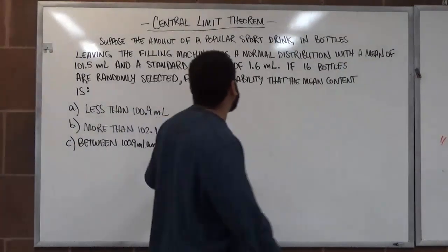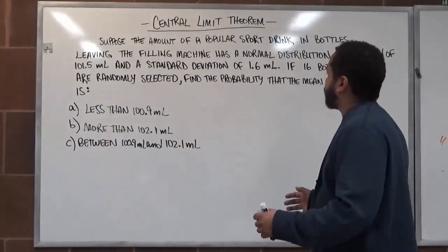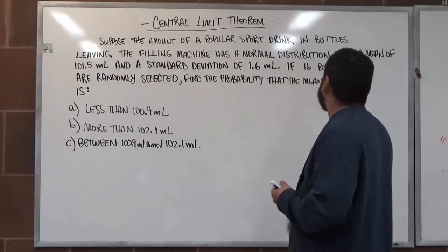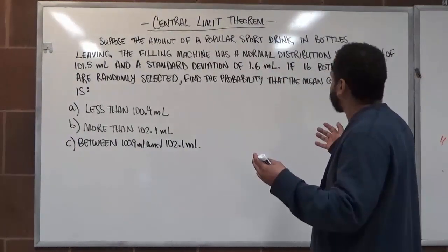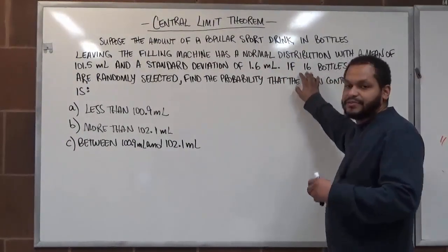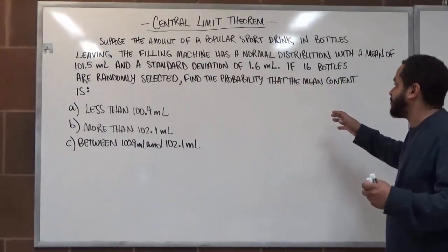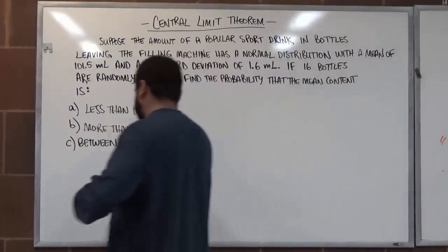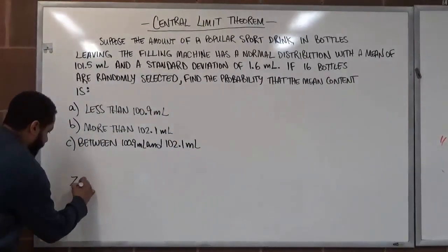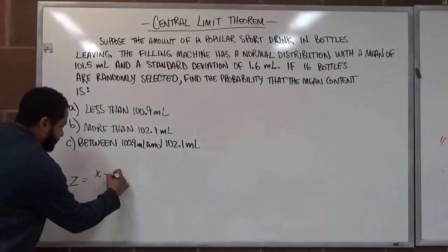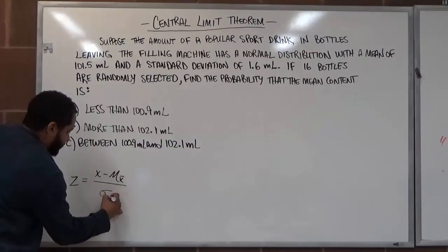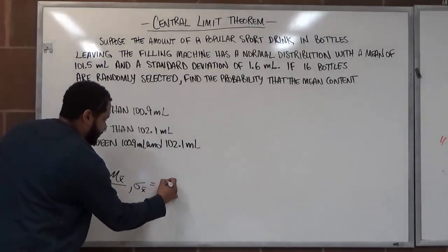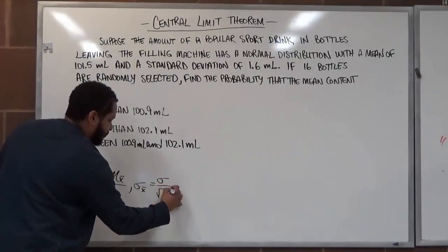Before we begin anything on this problem, we have to check a few things for the central limit theorem. We already know this has a normal distribution, and because it has a normal distribution, no matter what sample size we have, we can apply the central limit theorem to it, where n just becomes n. Our central limit theorem formula is z equals x-bar minus μ_x̄ over our standard error.